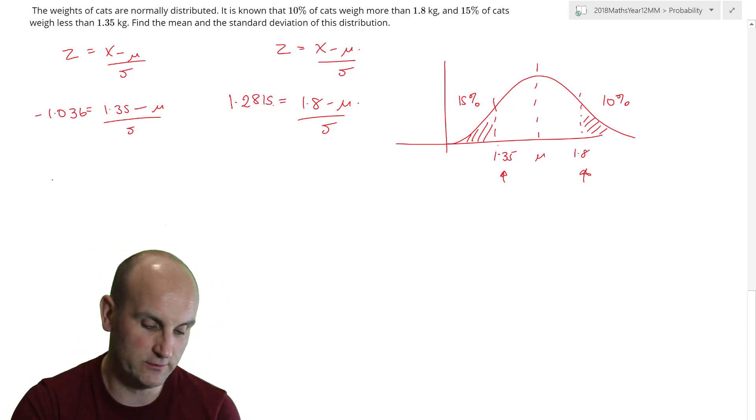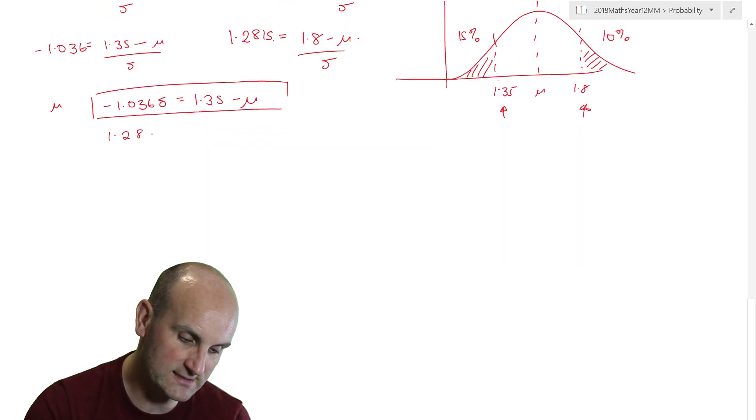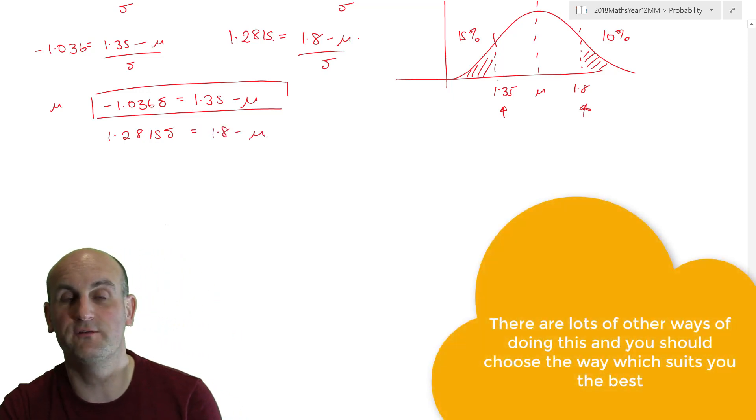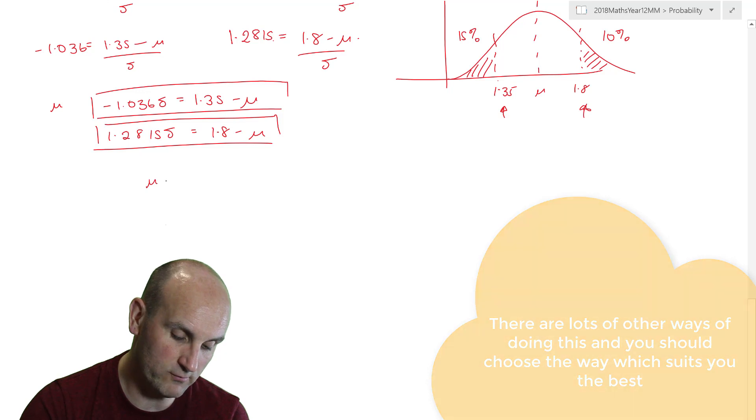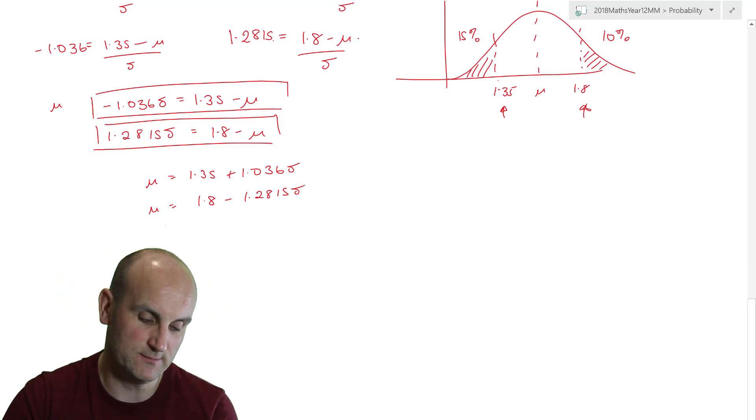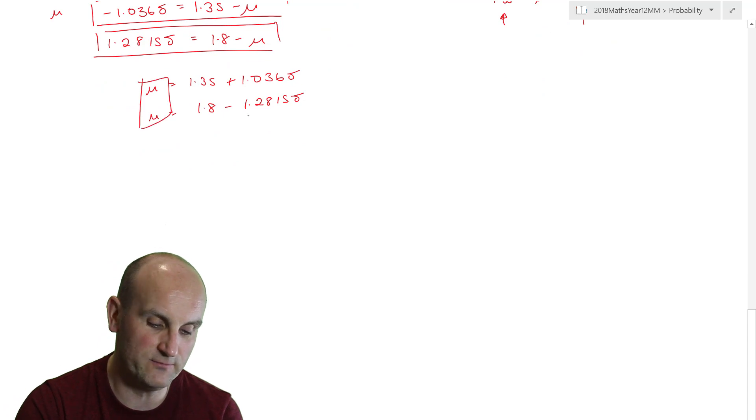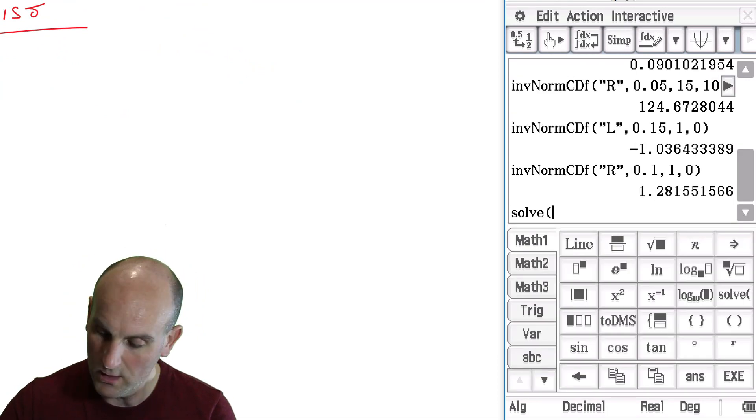So what I tend to do now is just equate these. But to do that, I'm going to equate it in terms of mu. So I'm going to make both equations equal mu first. So minus 1.036 times sigma is equal to 1.35 minus mu. That's my first equation. And my second equation is going to give me 1.2815 sigma is 1.8 minus mu. There may be lots of other ways of doing this and shortcuts, but making those equal or rather rearranging for mu gives me 1.35 plus 1.036 sigma. And mu is equal to 1.8 minus 1.2815 sigma. Now by equating those, if they are the same, then they are the same. I can use my CAS calculator to help me solve this.